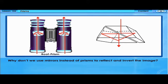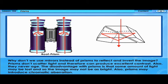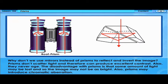Why don't we use mirrors instead of prisms to reflect and invert the image? Prisms don't scatter light and therefore can produce excellent contrast. Also, they never age. The disadvantage with prisms is that some amount of light may be lost and so the image may not be as bright. Also, prisms may introduce chromatic aberration.